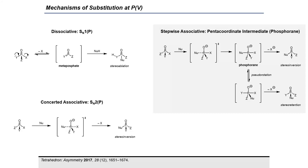The third type of mechanism for substitution at phosphorus-5 is a stepwise associative pathway, which proceeds through a pentacoordinate intermediate. In this mechanism, an initial step involves bond formation of the phosphorus-5 electrophile with a nucleophile to form an sp3d hybridized pentacoordinate intermediate, sometimes referred to as a phosphorane, which exists as a trigonal bipyramid. These pentacoordinate intermediates are subject to a process called pseudorotation, which can cause changes in absolute configuration at phosphorus. As a result, substitution reactions that proceed through stepwise associative pathways have multiple possible stereochemical outcomes, including stereoinversion, stereoretention, or a mixture of stereoisomers.